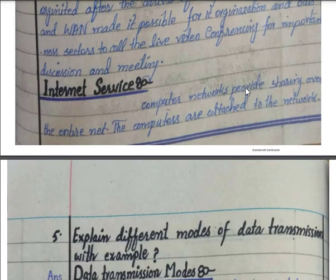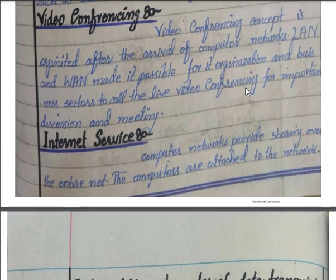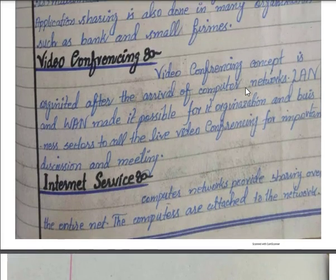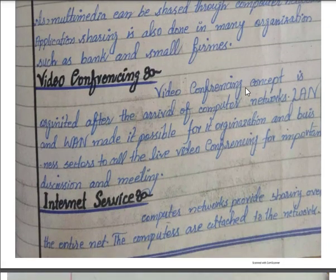The last use we have is internet services. Computer networks provide sharing of data over the internet, and the computers are attached to the networks. So these are the different uses of computer networks that we have studied so far.